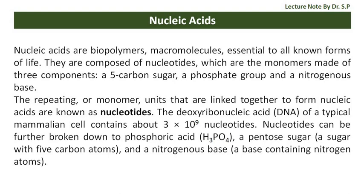The repeating, or monomer, units that are linked together to form nucleic acids are known as nucleotides. The deoxyribonucleic acid, DNA, of a typical mammalian cell contains about 3 × 10⁹ nucleotides.